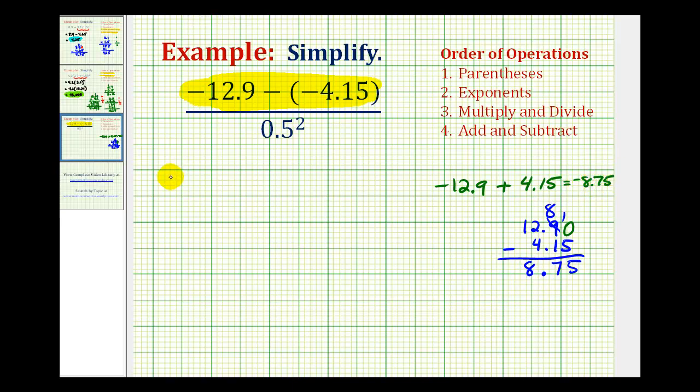So now we know the numerator is negative 8.75, and now let's simplify the denominator. Well, the denominator is 0.5 squared, which means 0.5 times 0.5.